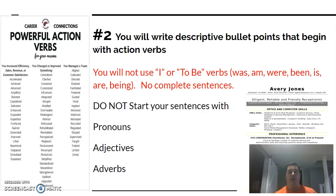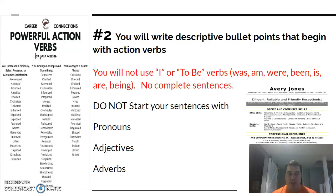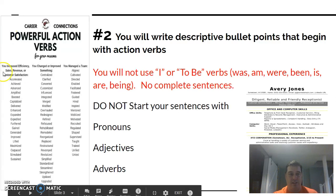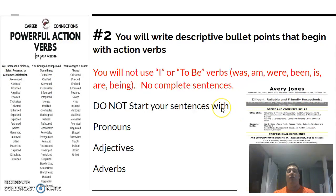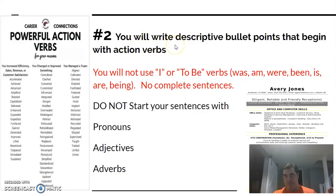Commandment number two: you will write descriptive bullet points that begin with action verbs. You're not going to use the pronoun 'I,' and you're not going to use to-be verbs like was, am, were, been, is, are, or being. You want strong, active verbs. Here's a list of powerful action verbs and an example. You're not going to start any sentences with pronouns, adjectives, or adverbs.